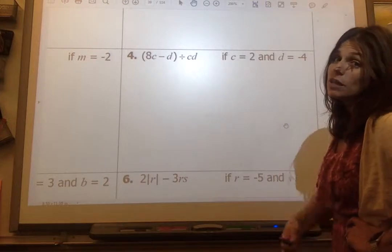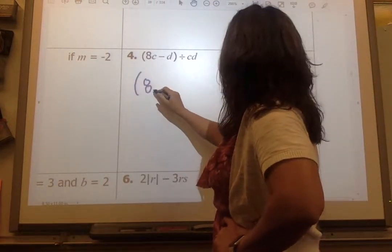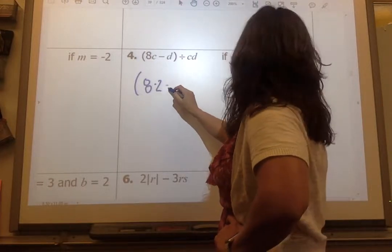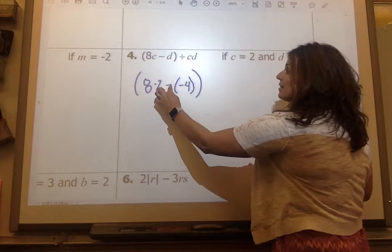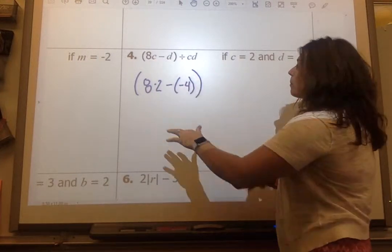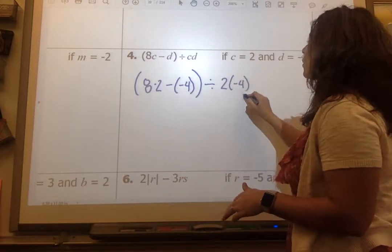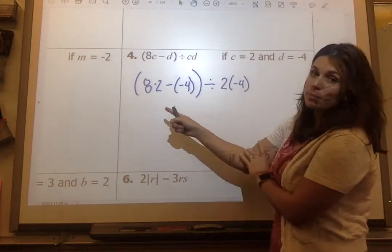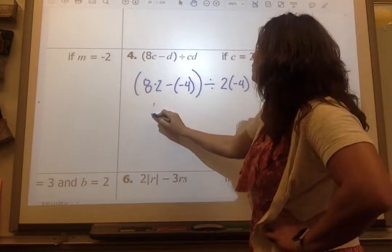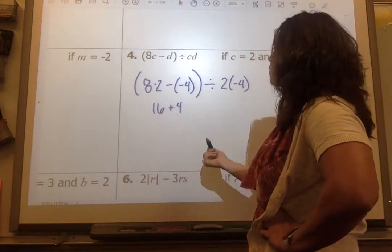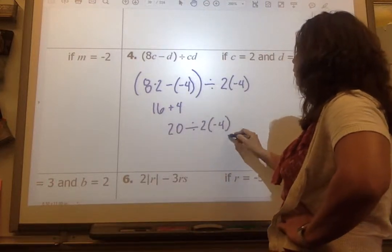I love the ones with these negatives. So let's take a look at number 4. Really paying particular attention again to that setup. Open parentheses. I get 8 times 2 minus a negative 4. Okay. Minus stays the same and d is negative 4. And then I close out my parentheses. Divided by 2 times negative 4.